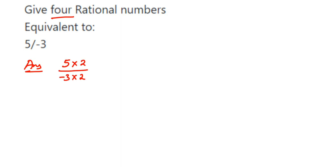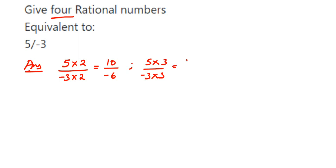First, I'm going to multiply 5 upon minus 3 by 2 in the numerator and denominator, so this becomes 10 upon minus 6. Second, I'm going to multiply 5 upon minus 3 by 3, so this will be equal to 15 upon minus 9.